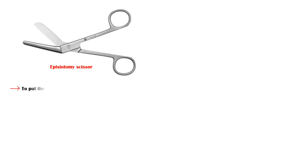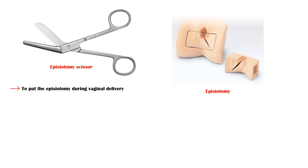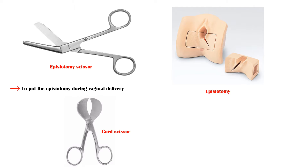Episiotomy scissors are used to perform the episiotomy during vaginal delivery. Cord scissors are used to cut the umbilical cord after the delivery of the baby.